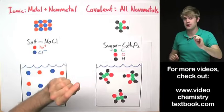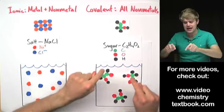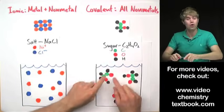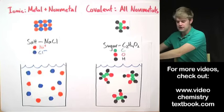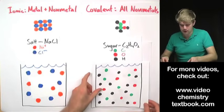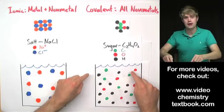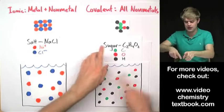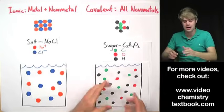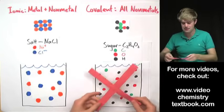A big mistake that people make—I don't want you to make this mistake—is they think that when sugar or other covalent compounds dissolve, they think that the atoms that make up the molecules totally break apart. And then you end up with a glass of water that has all these carbon and oxygen and hydrogen atoms just floating around. That does not happen. Big red X.